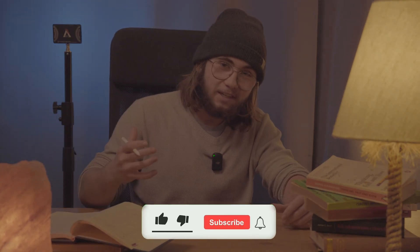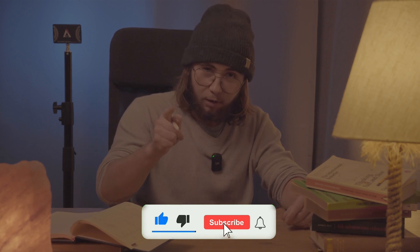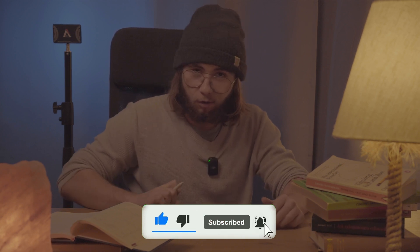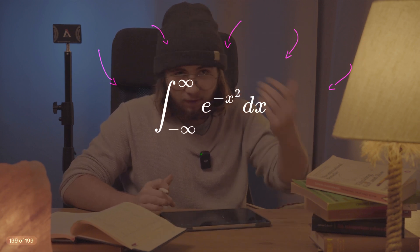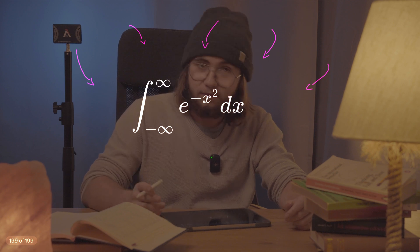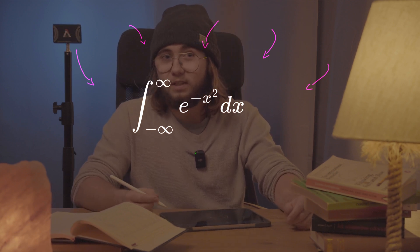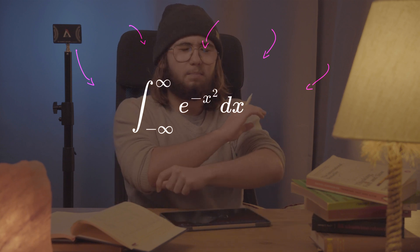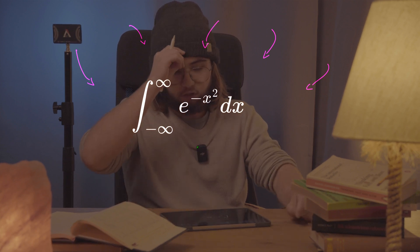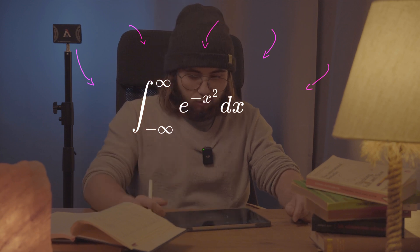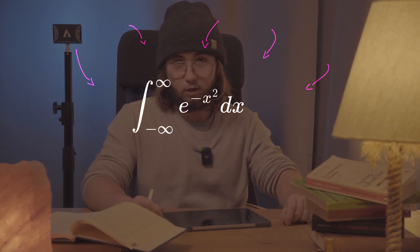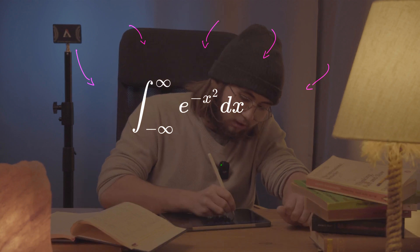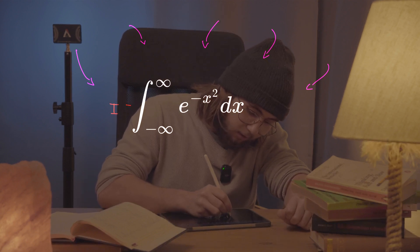Today we are going to evaluate the Gaussian integral without using polar coordinates. We're supposed to evaluate the famous — or maybe infamous — integral from negative infinity to infinity of e to the negative x squared, which gives us the area under the bell curve corresponding to the normal distribution.